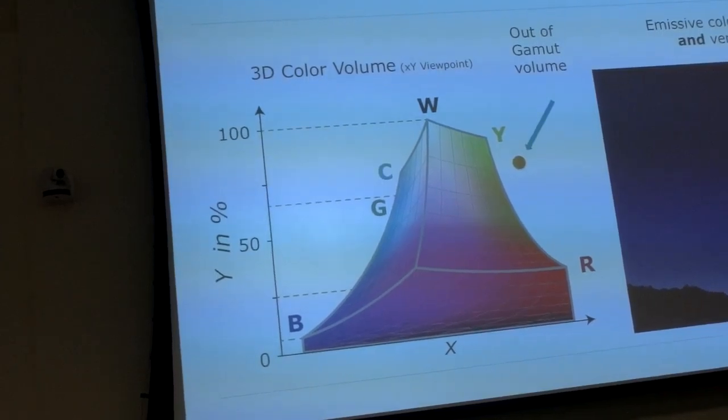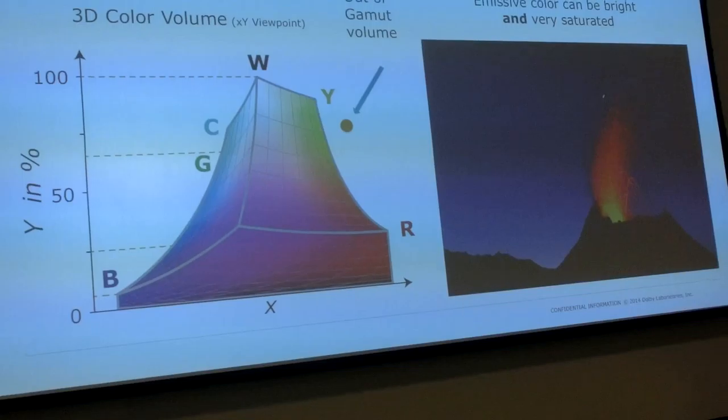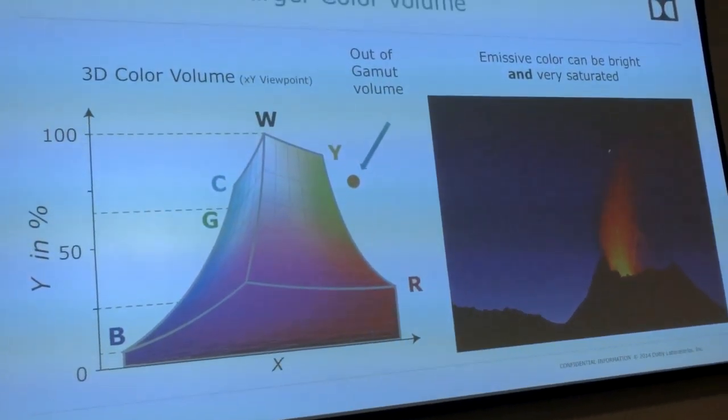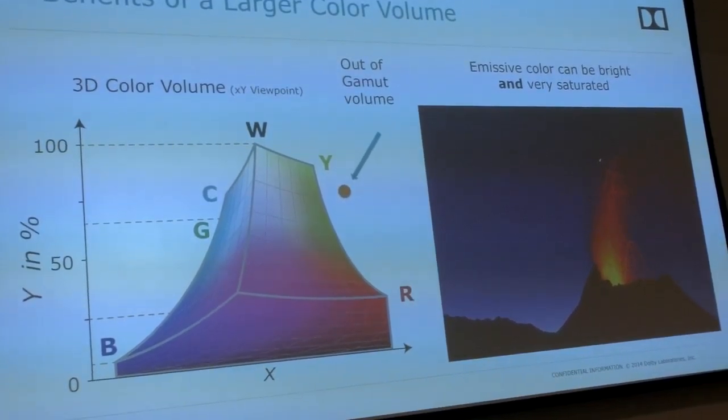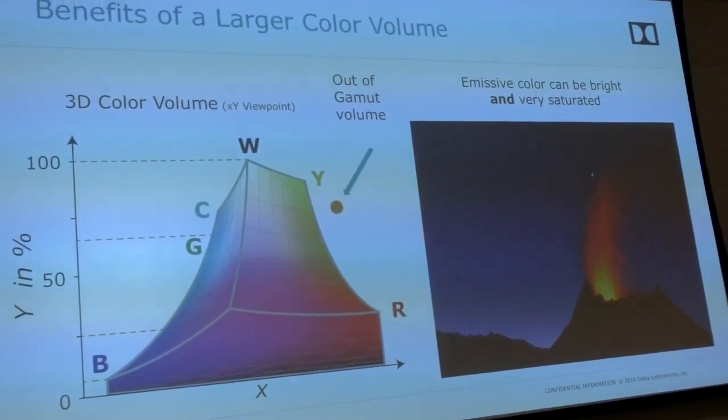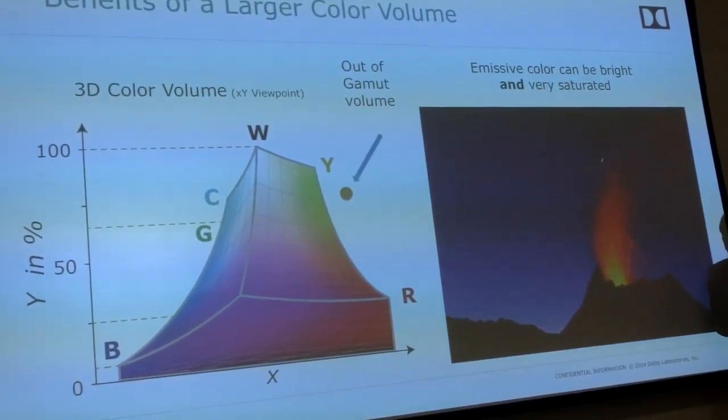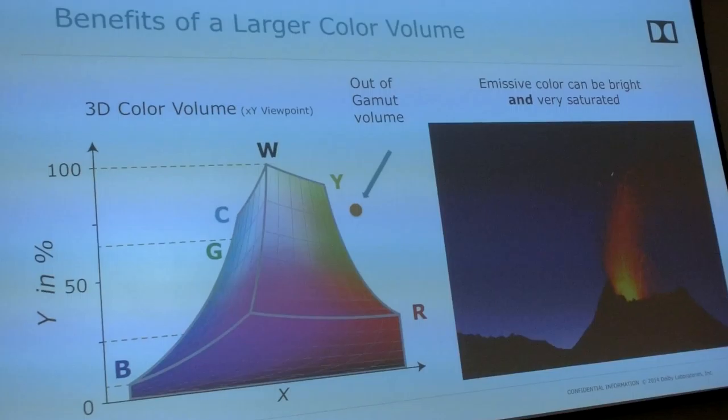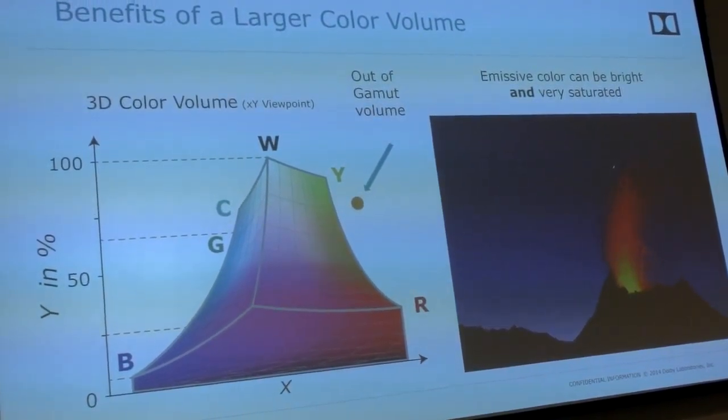So we have this problem with the cinema color volume. I try to describe it to folks because this is kind of hard to explain. The soccer ball and the football—the football is television colors. You know, football's oblong sticking up, and the soccer ball is cinema. The football goes right through the soccer ball. So there are a set of common colors, but there are colors in both that can't be reproduced. That's the problem we have in today's world.